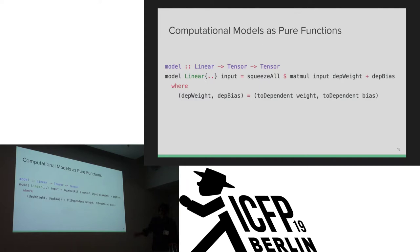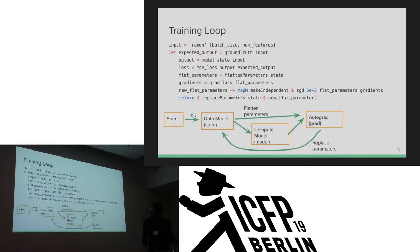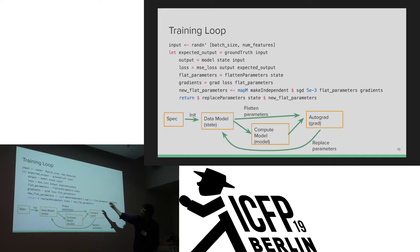The training loop is here. First, calculate output and loss. Then the Data Model serializes the parameters. Then Autograd generates new gradients and updates, producing the new Data Model.